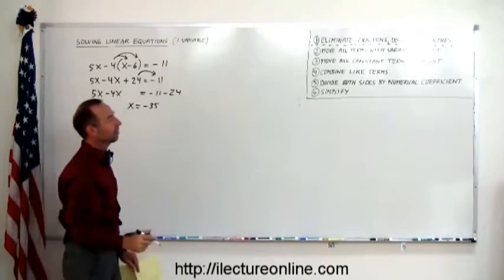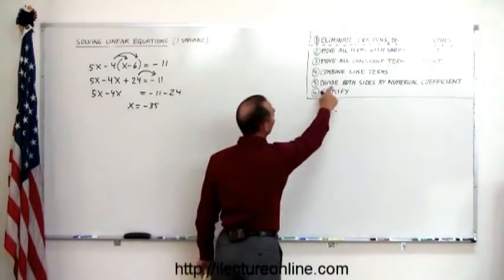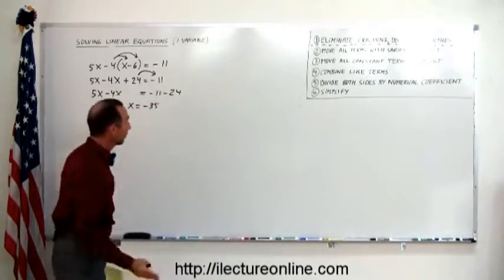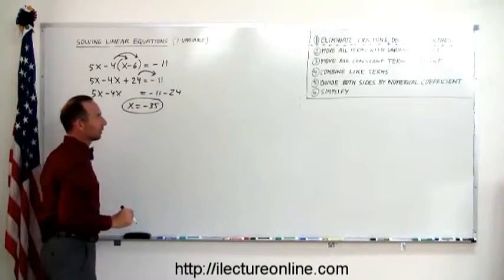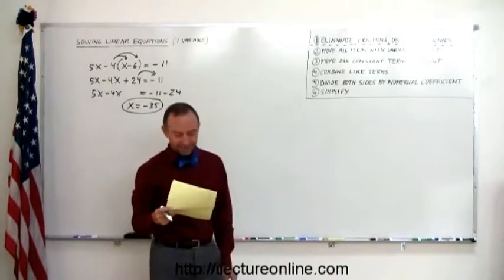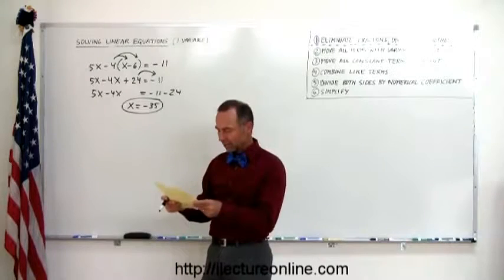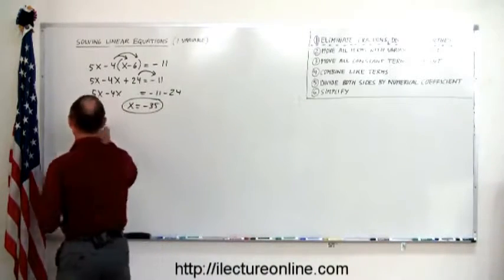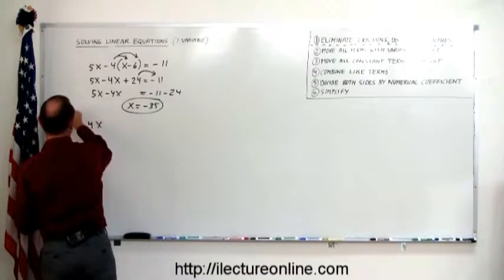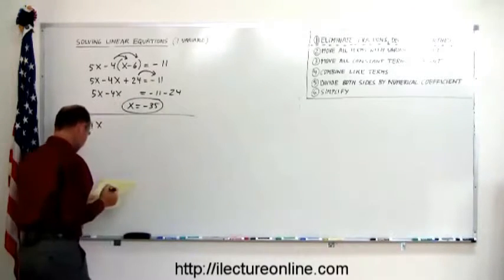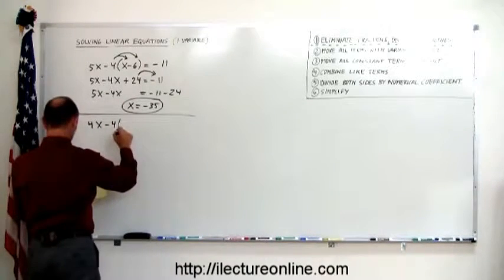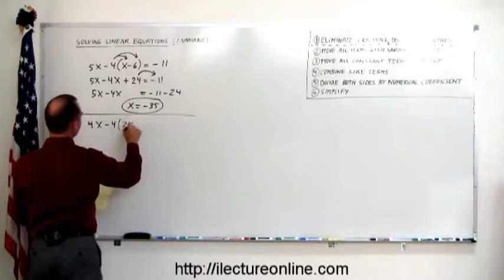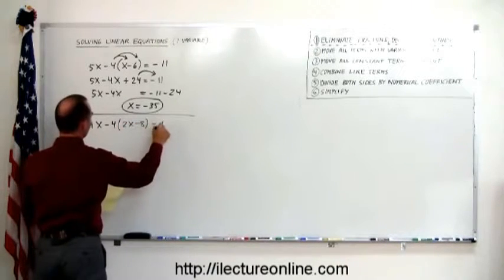And the next step is no longer necessary. It says divide both sides by numerical coefficient. But on the left side we have a 1x. So there's our answer. Done. Okay, let's try this with another problem. How about this one? Let me draw a line so I can separate the two.